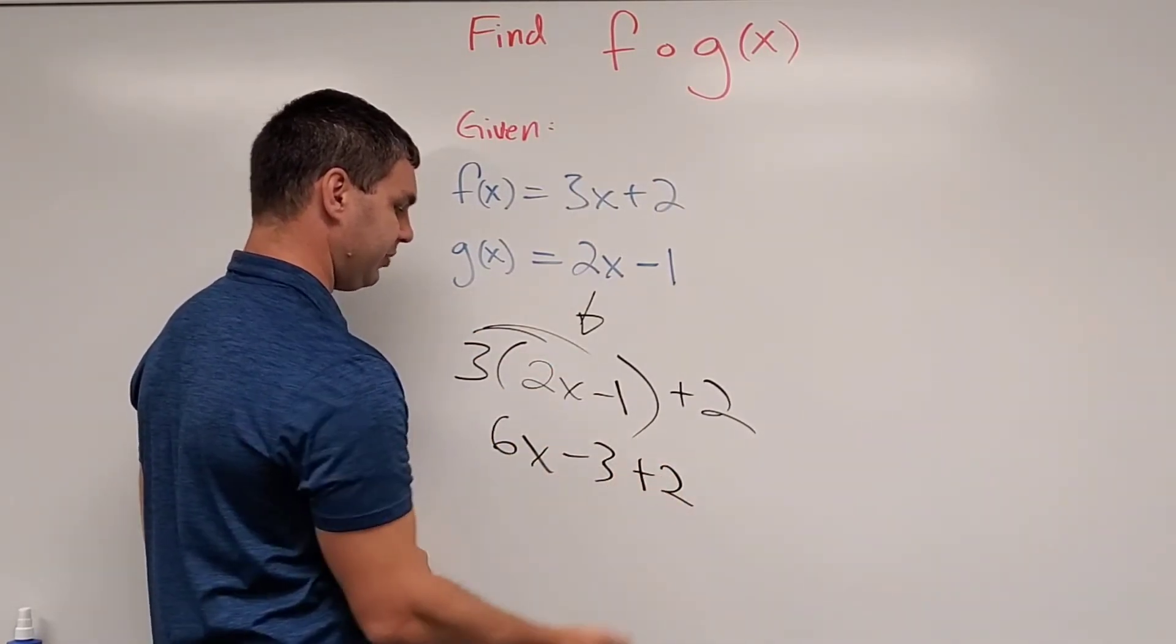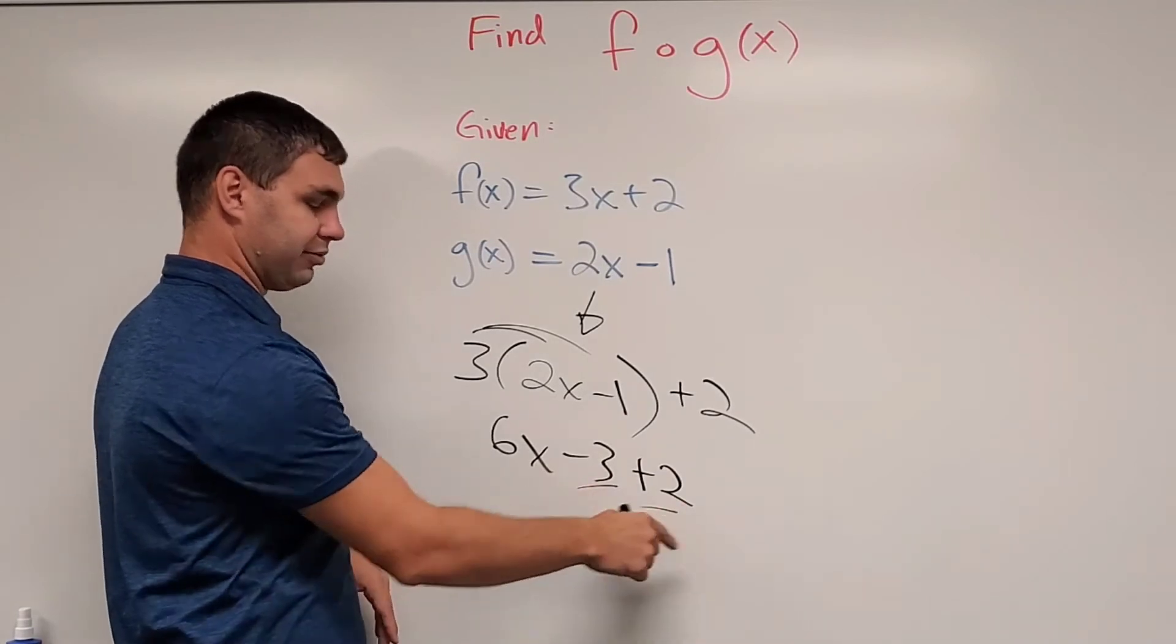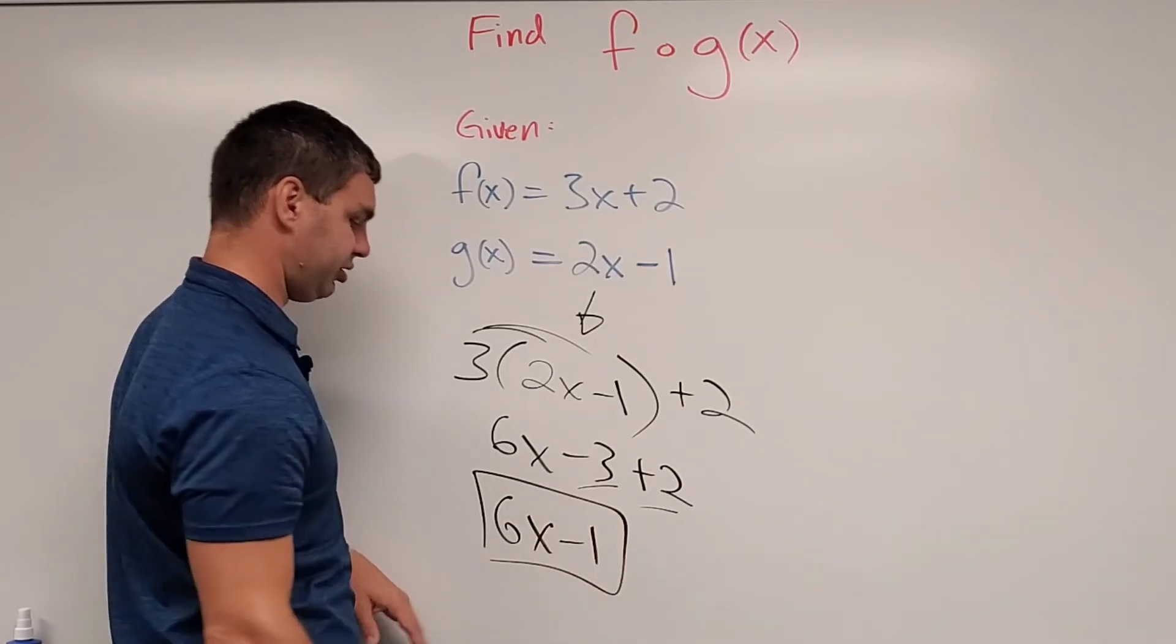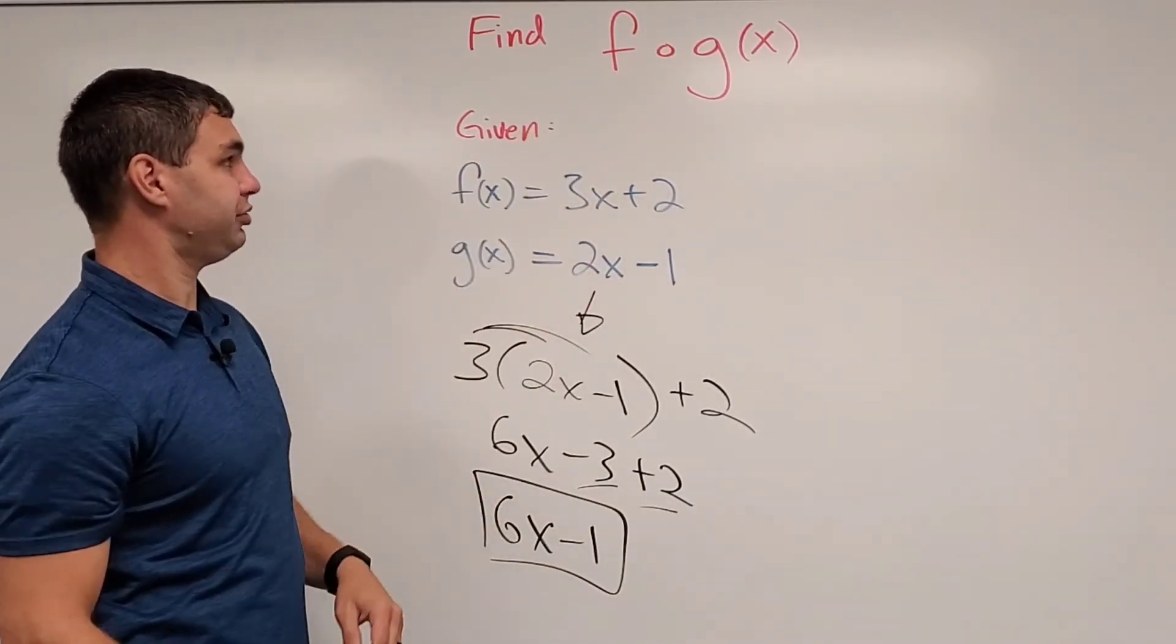...minus 3 plus 2. I have some like terms: negative 3 plus 2 is negative 1. So 6x minus 1 is the composition of f of g of x.